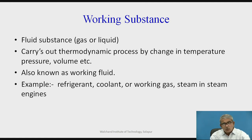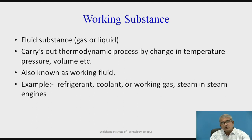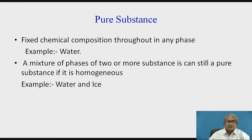Examples of working substance are refrigerant, coolant, working gas, and steam in a steam engine. When a number of changes occur in succession, the complete series is called a path — meaning the working substance moves from one equilibrium state to another, from state 1 to state 2, from state 2 to state 3. At state 1, knowing minimum two parameters such as P1 and V1 on a P-V graph defines the state. Some transaction going on from state 1 to state 2 gives P2 and V2. These are the definitions of working substance and pure substance.